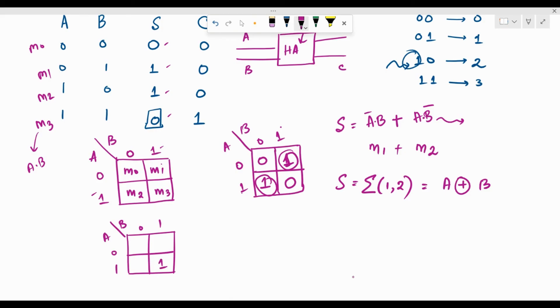So, here we have where A and B are 1s. We are going to fill it with a 1. The rest of the boxes are going to be 0. So, we can say that the carry is nothing but A dot B.